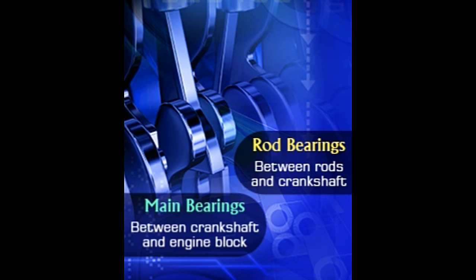Such bearings can be either of a split-sleeve or anti-friction type. Split-sleeve bearings are a circular shell made of two halves which fit into each other. Lubrication is provided by a thin layer of oil between the bearing and the part it is fixed on. An anti-friction, or ball bearing, uses moving components like balls to reduce friction. However, most bearings used in IC engines are of the split-sleeve type, because the small contact area of ball bearings cannot handle the heavy stresses produced in such cases.